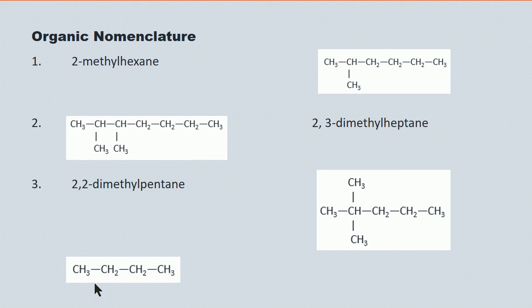Here's a simpler example. One, two, three, four — this is a straight chain alkane with four carbons in it, making this butane.